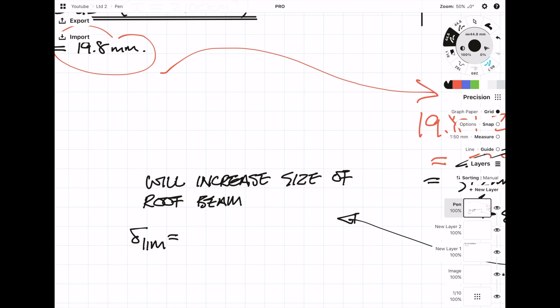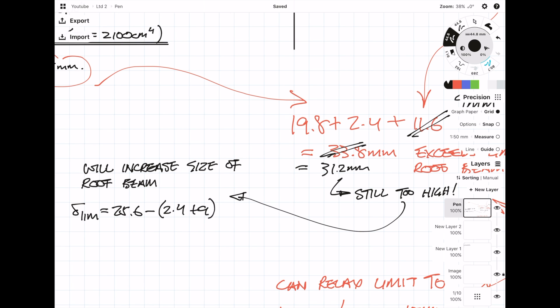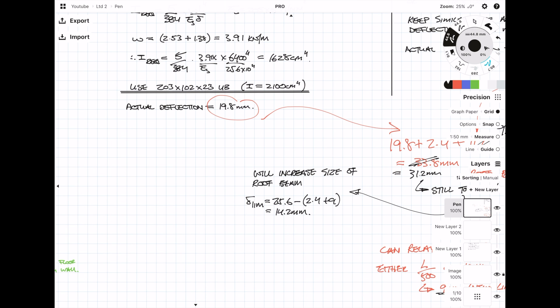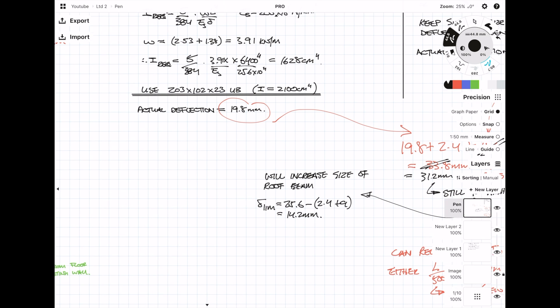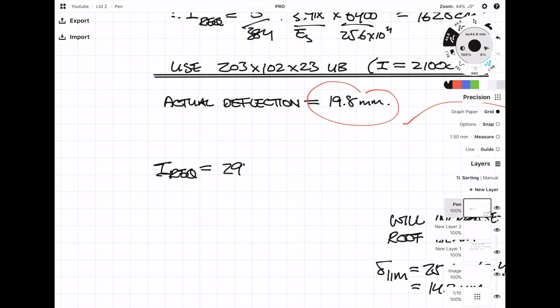We're not changing anything for the first transfer beam, but remember we're changing the limit for the second transfer beam to 9 mm. Our roof beam is going to have a new deflection limit of 25.6 mm minus the combined deflections of the first and second transfer beam. When you plug the numbers in again, you get an I value of 2934 cm⁴, and that means we can use a 254 by 102 by 25 UB, which has an I value of 3410 cm⁴.